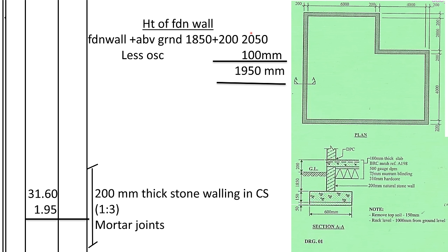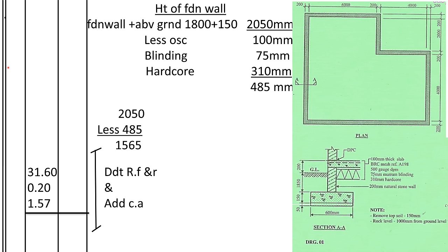For the foundation walling, we find the area: center line × depth × thickness. The center line is 31,600mm as already calculated. The wall depth is the total height — 1,850mm below ground plus 200mm above ground, minus the concrete thickness of 100mm — giving 1,950mm. So: center line × 1,950mm depth × 200mm width = area of wall. Description: 200mm thick stone walling in cement-sand mortar, 1:3 mix, in foundation strip.